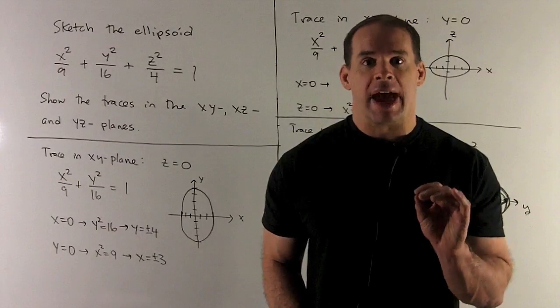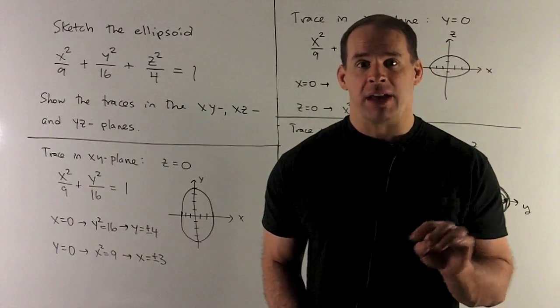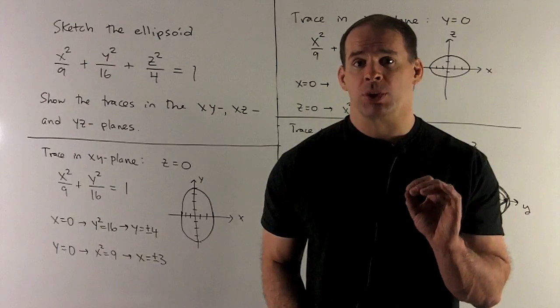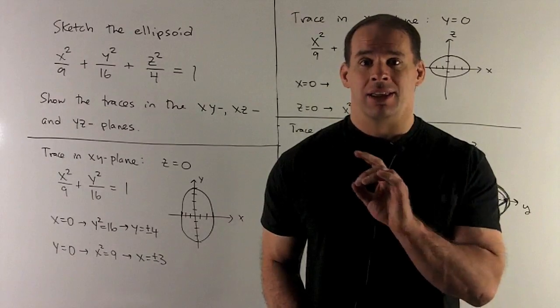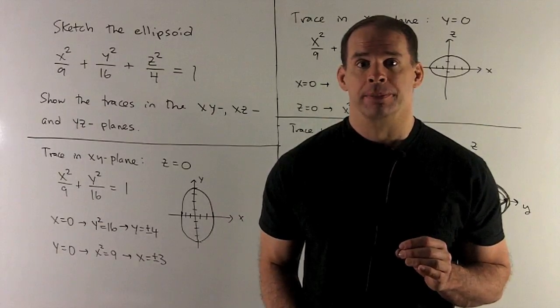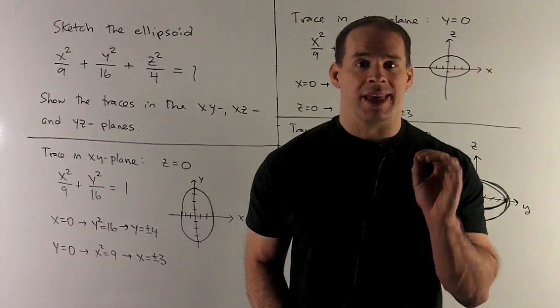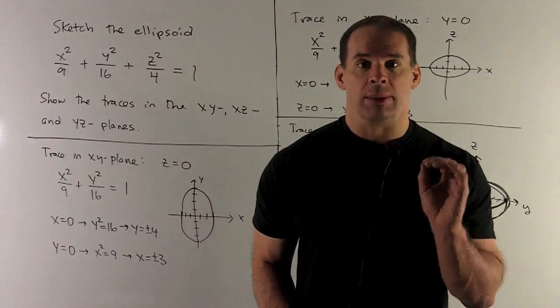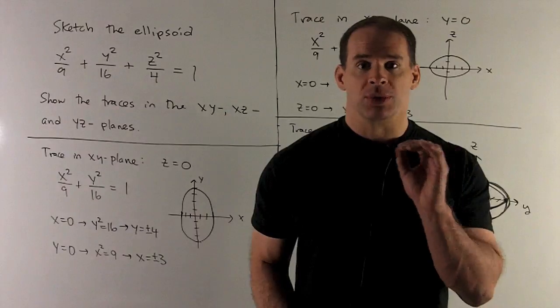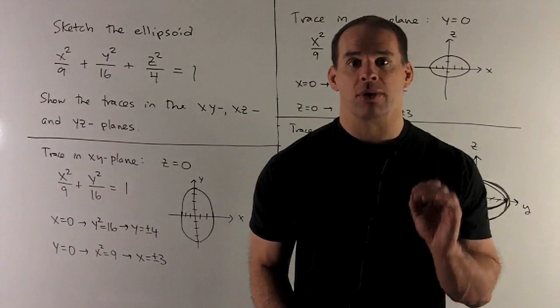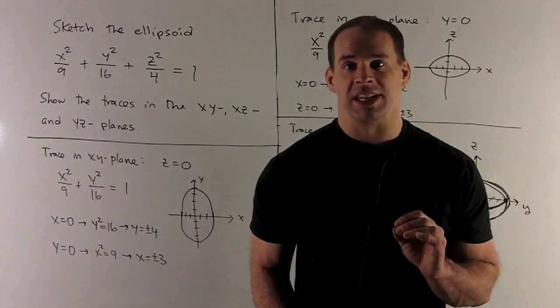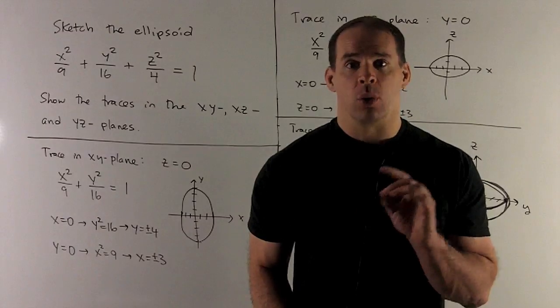If we do that, that'll give us an idea of how to fill in the rest of our ellipsoid when we put things in xyz space. Okay, first the xy plane, so I'll let z be equal to zero. Put z equals zero into the equation, I get x²/9 + y²/16 = 1. That's the equation of an ellipse.